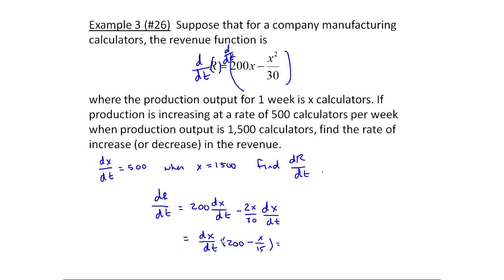We're trying to find dr/dt, and it equals this stuff. We have this is 500 times 200 minus x is 1500 over 15. So you go ahead and calculate this, and that's pretty straightforward, because 1500 over 15 is just 100. So this is 200 minus 100, so that's just 100 times 500. So you should get 50,000.